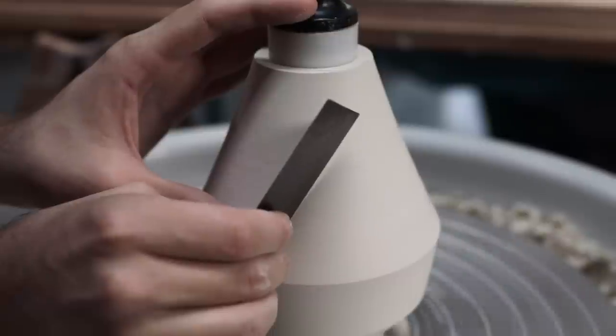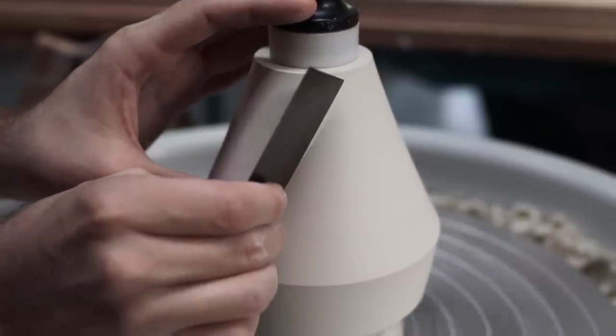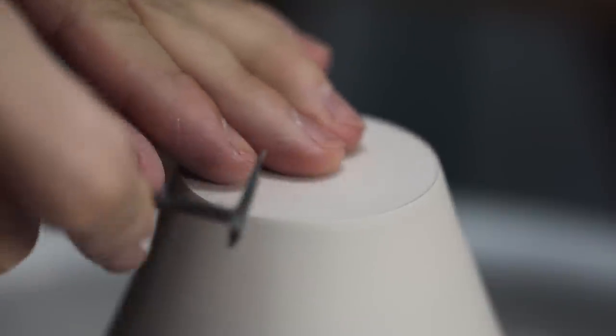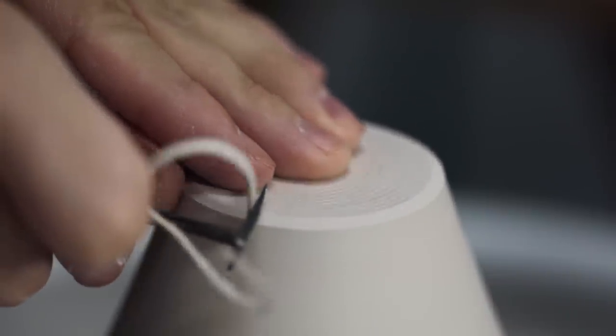Once trimmed, I used a flat metal kidney just to scrape over the surface, which removes some more obvious turning marks. I then trim the beveled edge, just knocking back that corner somewhat.